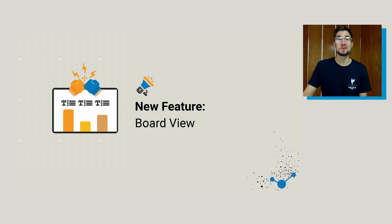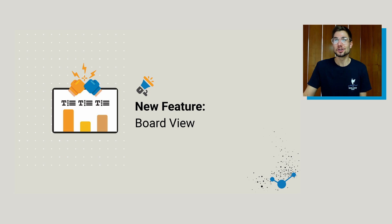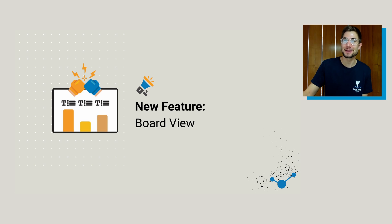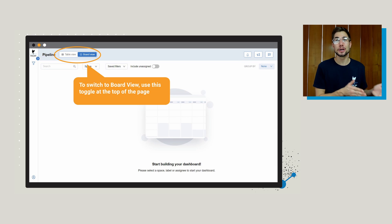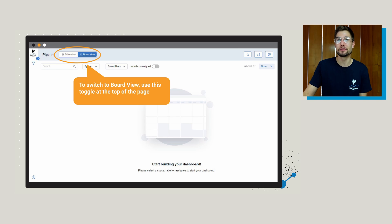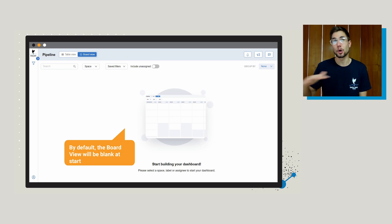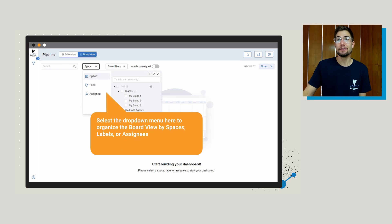The next feature is the board view. If you've used other project management tools, you're going to recognize this. People are asking us if we plan to integrate Datadive with other project management platforms — and the answer is yes. In the long term, we're already building out those integrations so it's going to work seamlessly. To switch from the table view into the board view, just use the toggle at the top of the page. By default, the board view is going to be totally blank at start, and from the dropdown menu you can organize the board view by spaces, labels, or assignees.